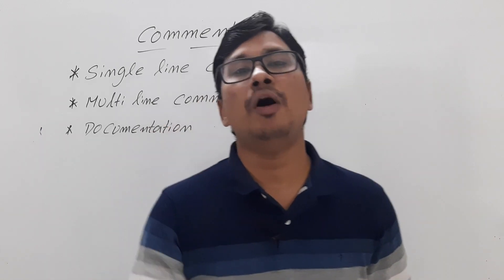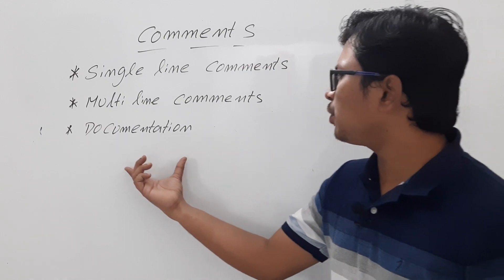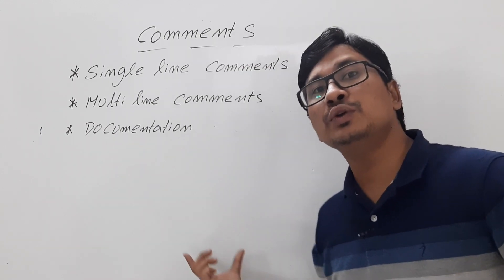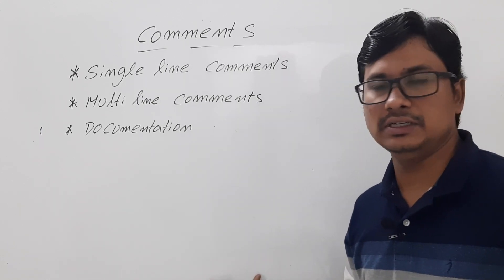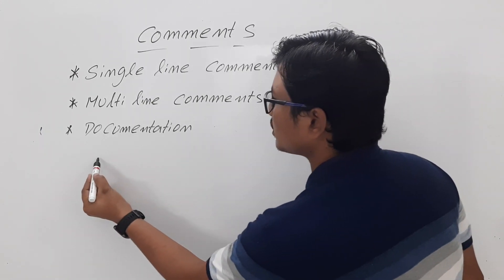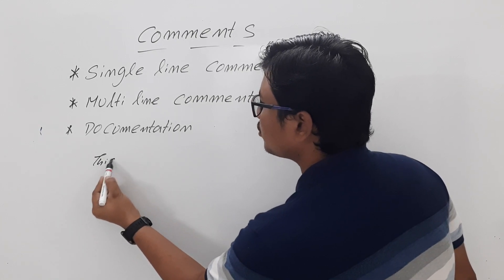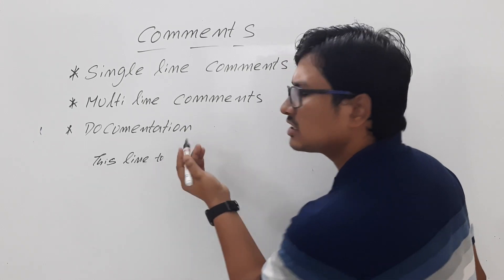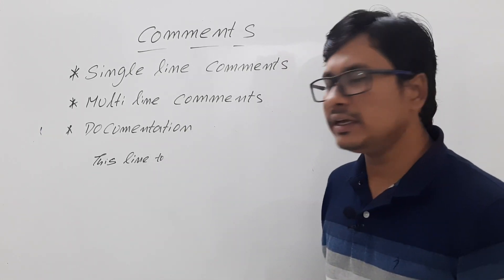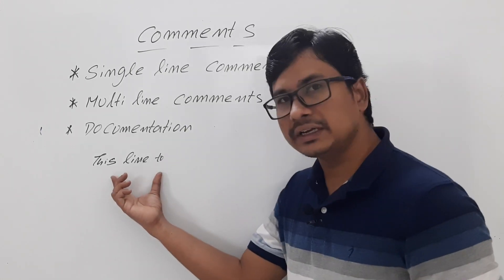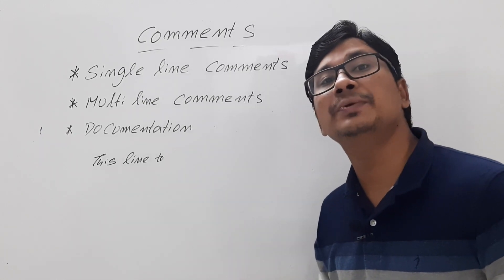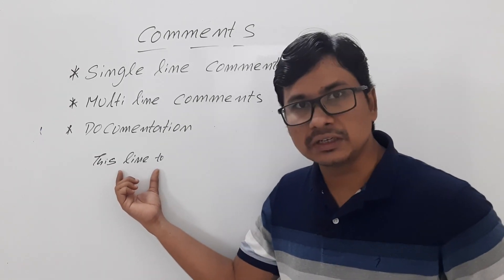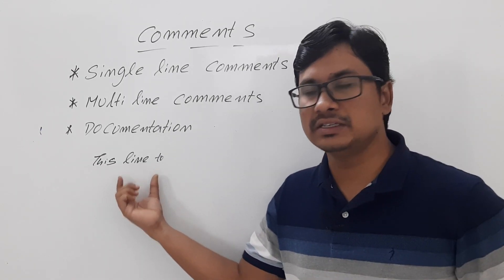First let me discuss what is a comment. In a program you have written some description. That description you don't want to get as an output. Suppose in a program you have written a line of code or a statement - something like 'I have written this to execute a recursion'. Whatever description you have written, that description should not be displayed in the output.